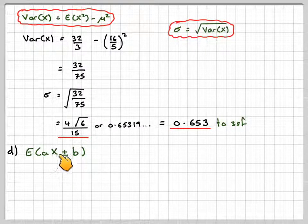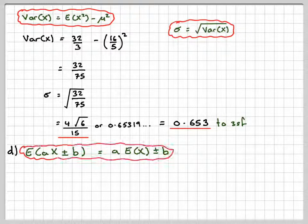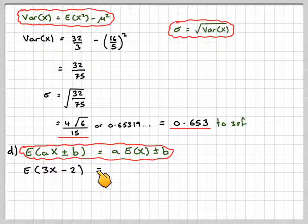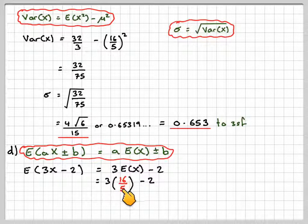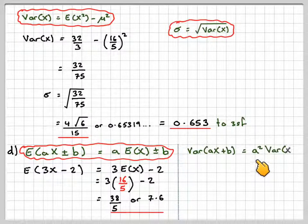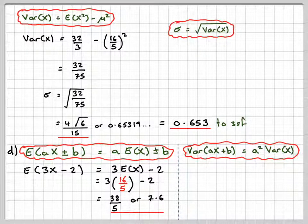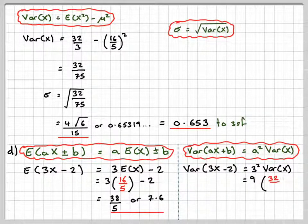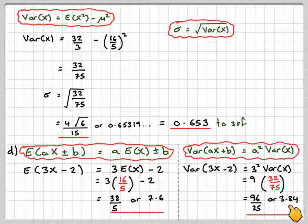Now we use expectation algebra. E[Ax ± B] = A·E[x] ± B, so E[3x − 2] = 3·E[x] − 2 = 3 × 16/5 − 2 = 38/5, or 7.8. For the variance, Var(Ax + B) = A²·Var(x), so Var(3x − 2) = 9 × 32/75 = 96/25, or 3.84.